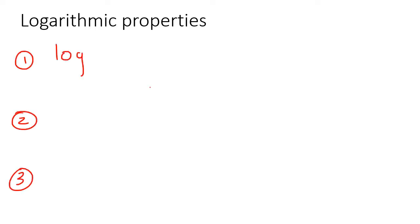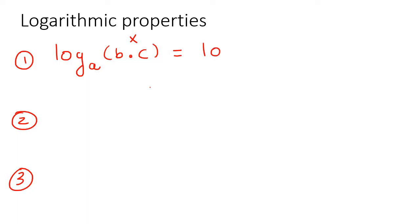The first one says the following: if you have a log of base A and you have two or more things multiplied together, then multiply becomes plus when you expand it. So multiply just becomes plus — that's pretty easy to remember.